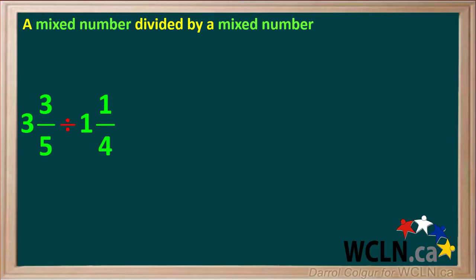The last example we'll do is a mixed number divided by another mixed number. Here is 3 and 3 fifths divided by 1 and a quarter. Pause the video and try this on your own first, then resume the video and check your answer.